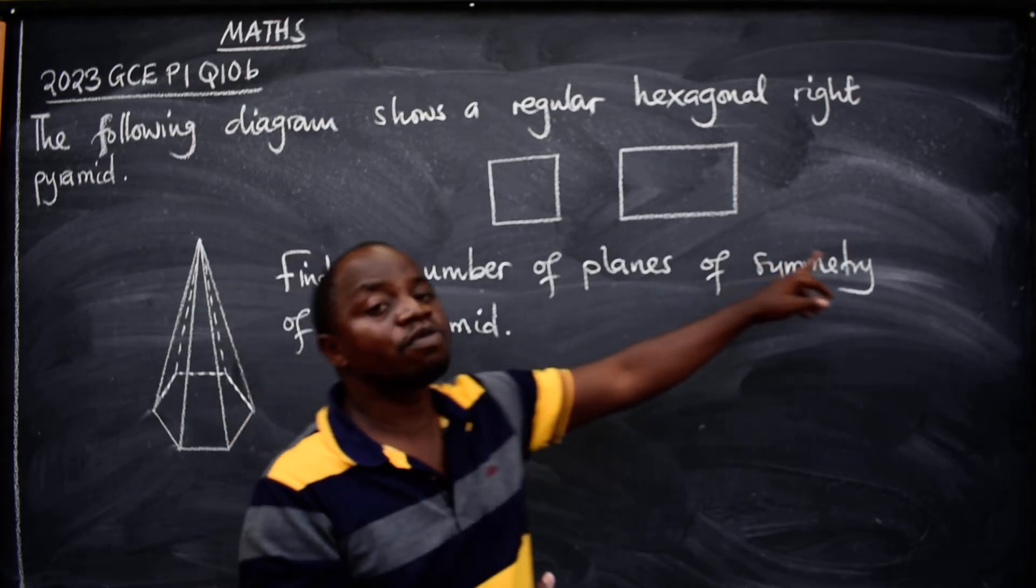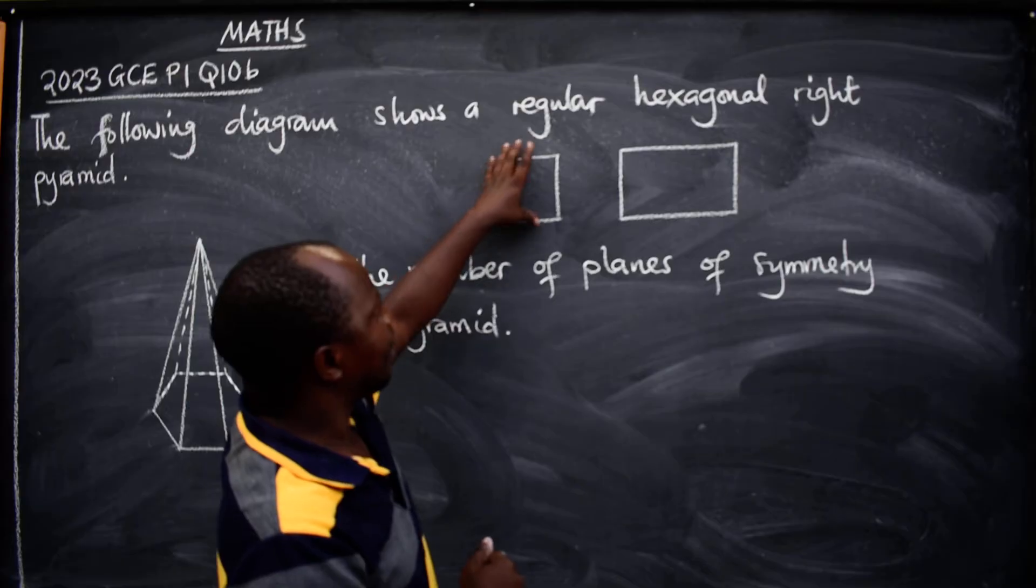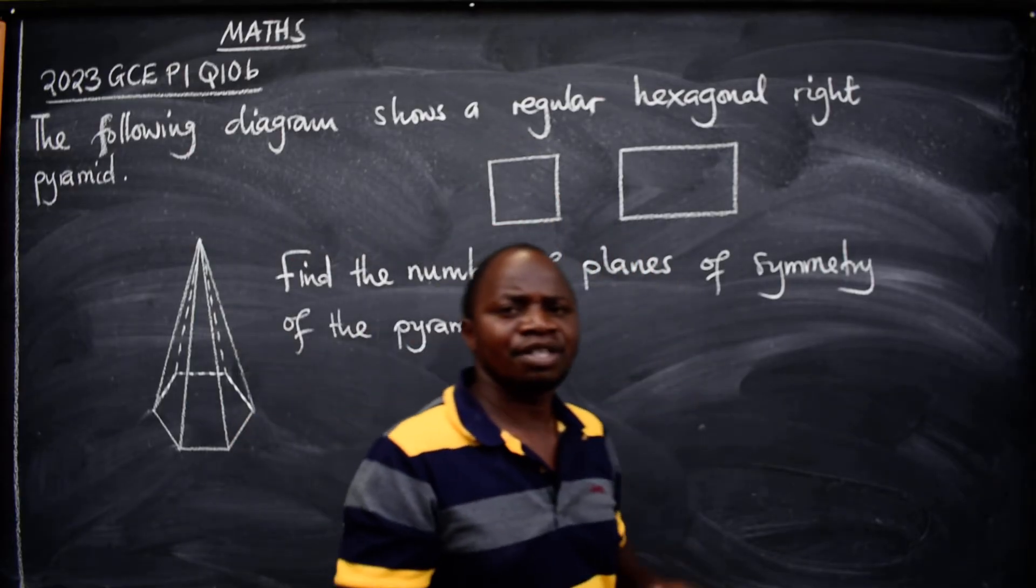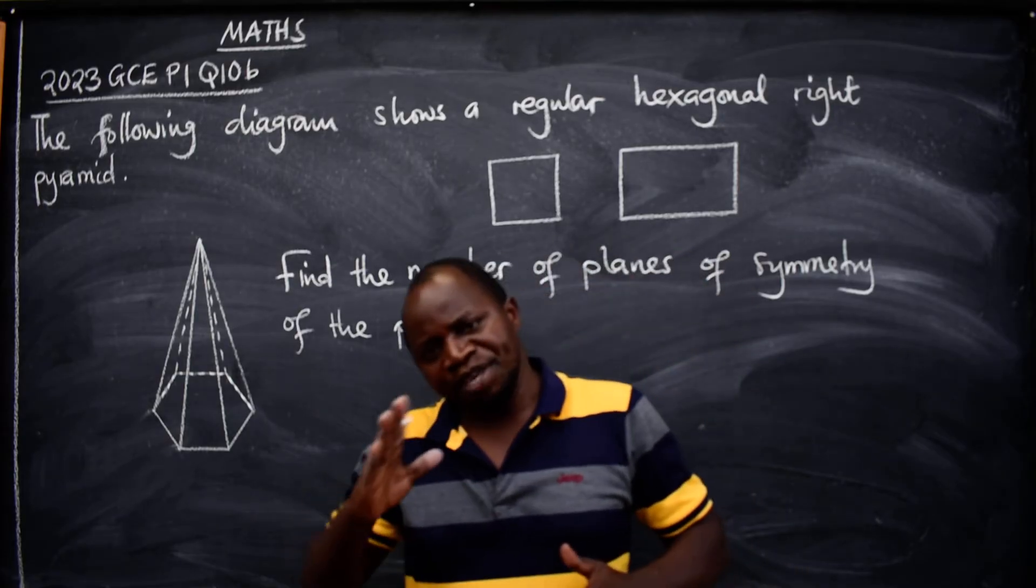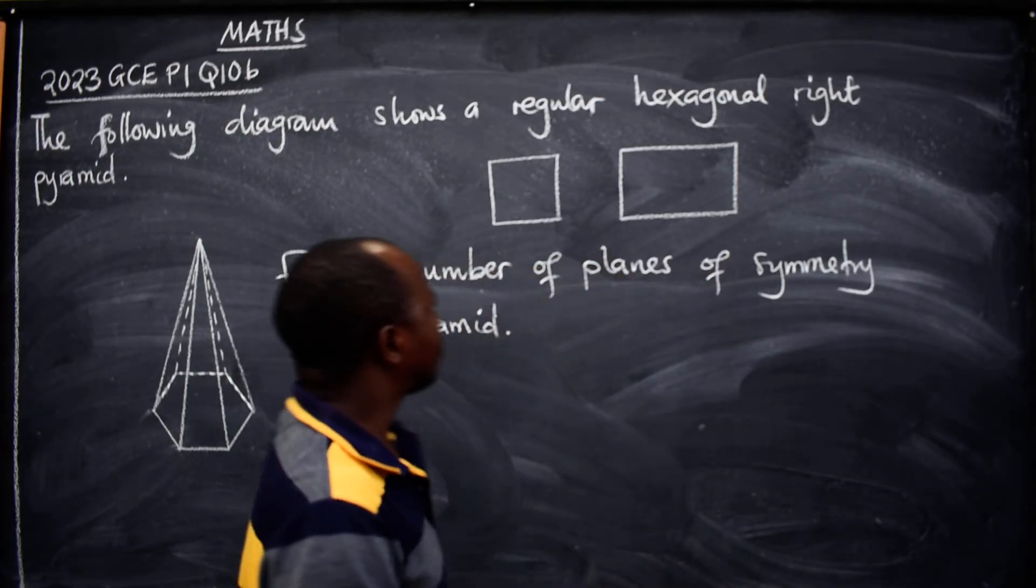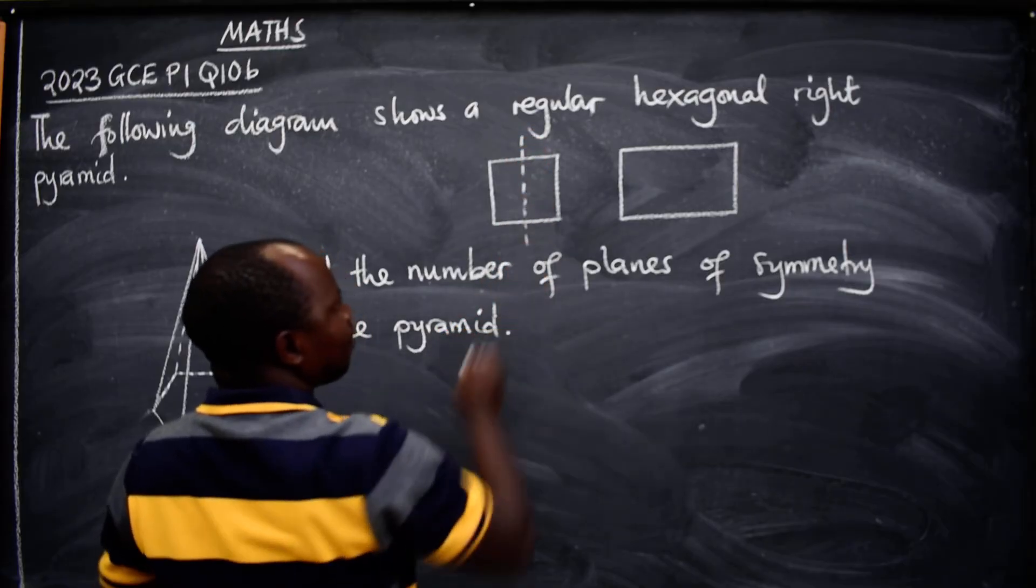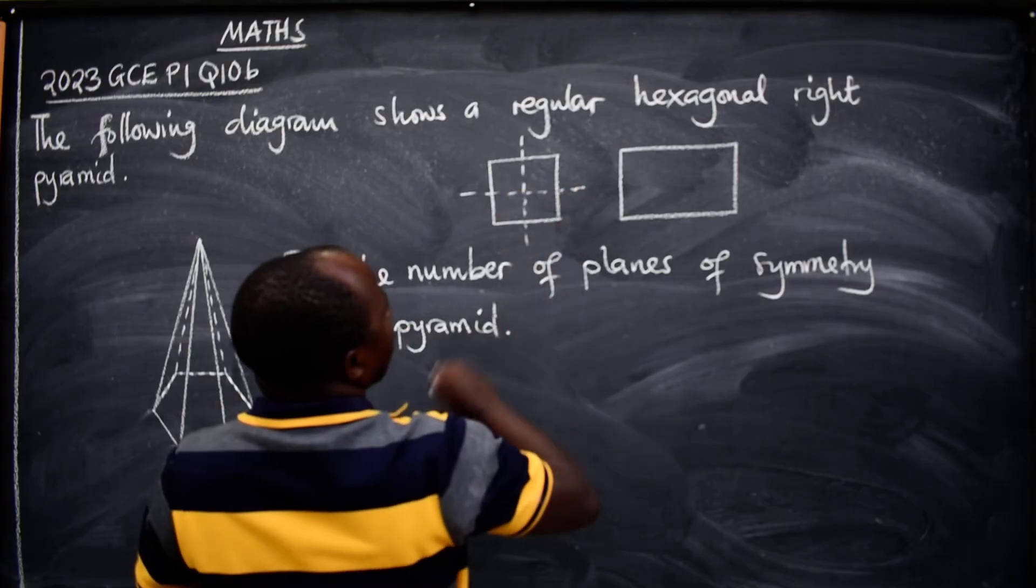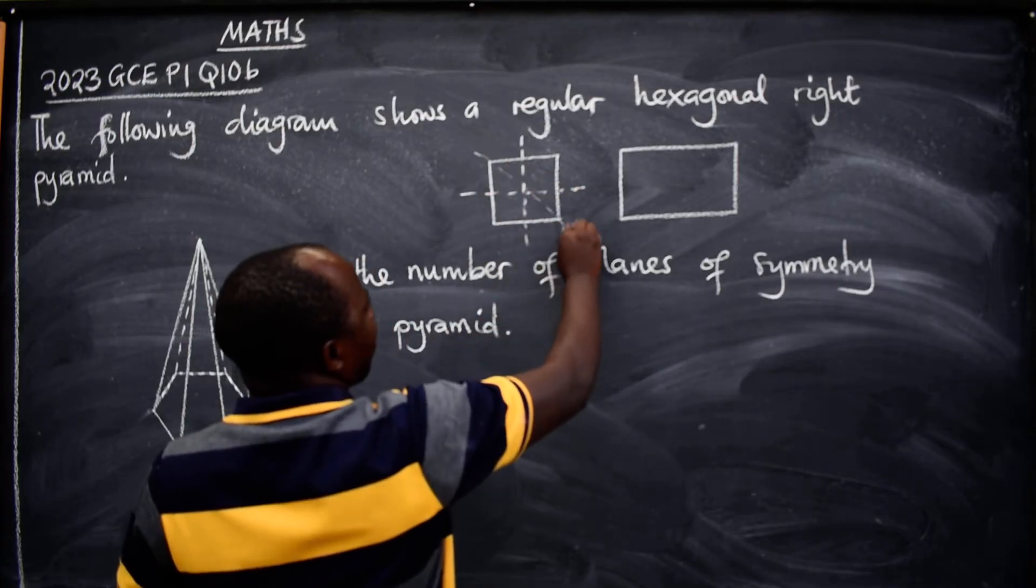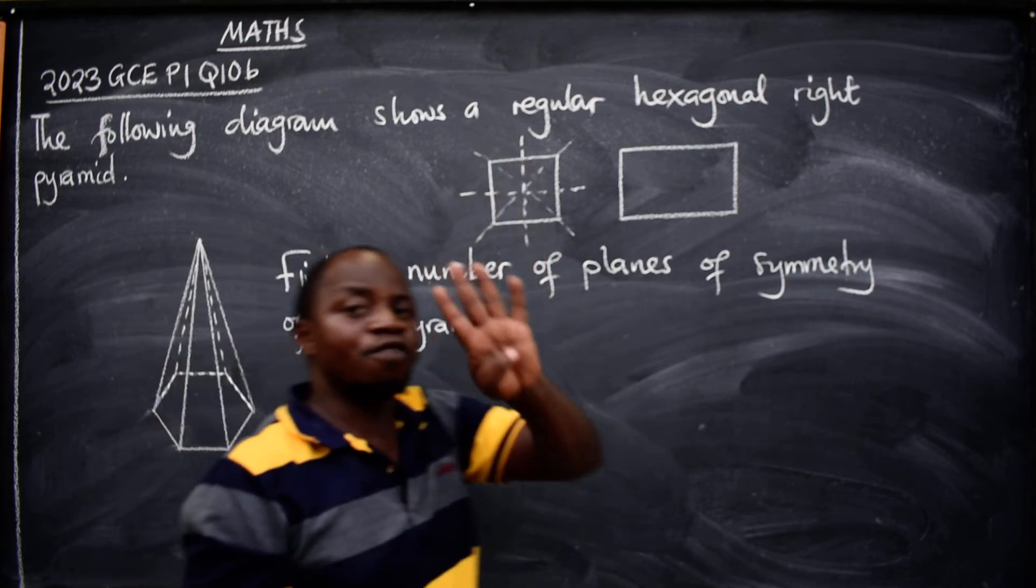So here, in how many ways can I cut this so that the left piece will be equal to the right piece? So the first one is here, I can cut it in that way, that's the first one. The second one is here, the third one is here, fourth is here. So we say this shape has got four lines of symmetry.